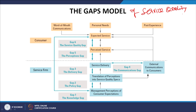Let us look at the gaps model diagram. Above this line are the customers and below this line is the service. Gap 1 is the knowledge gap, gap 2 is the policy gap, gap 3 is the delivery gap, gap 4 is the communication gap, gap 5 is the perception gap, and gap 6 is the service quality gap.